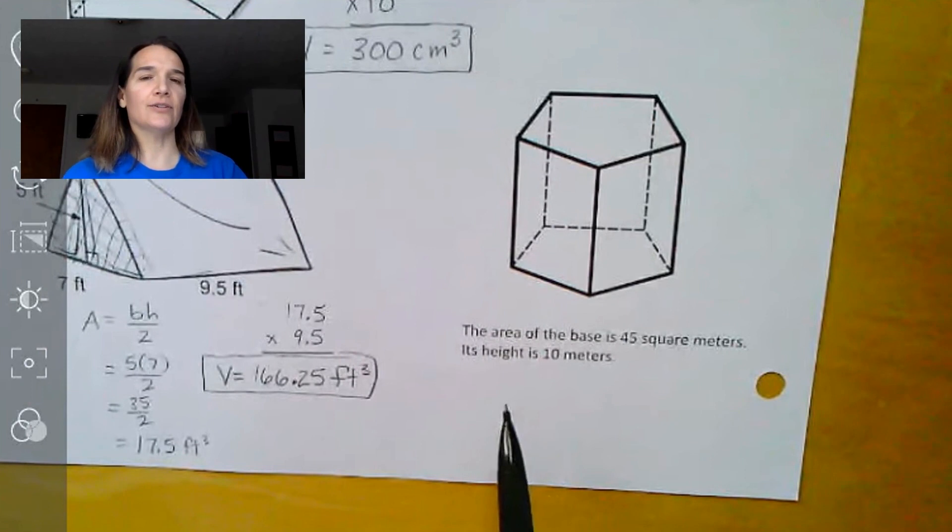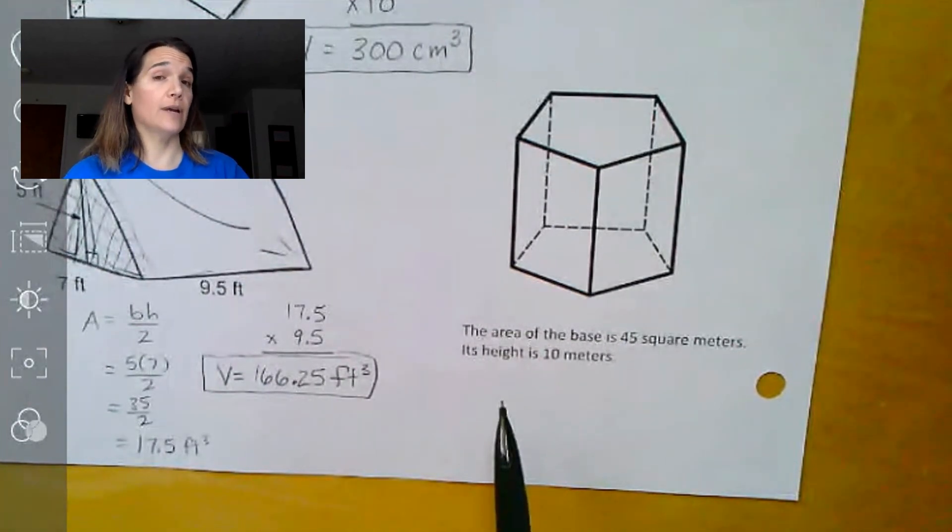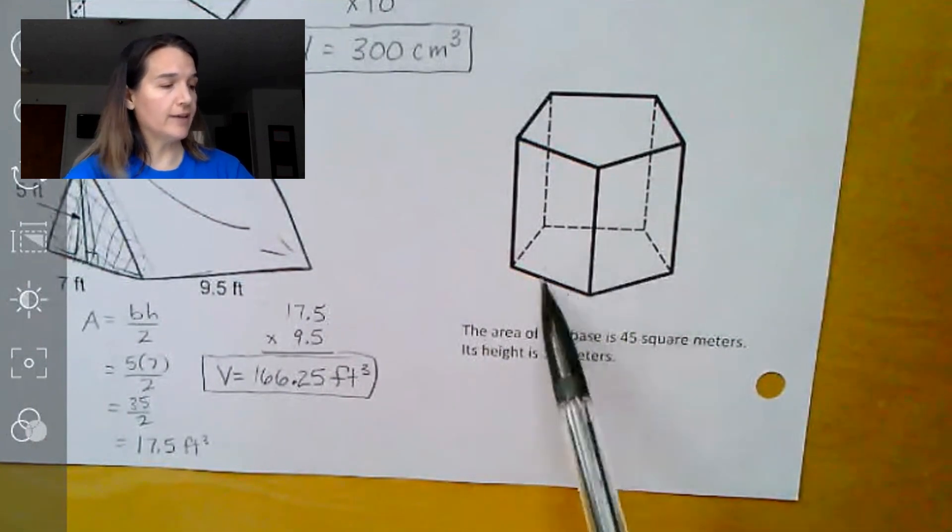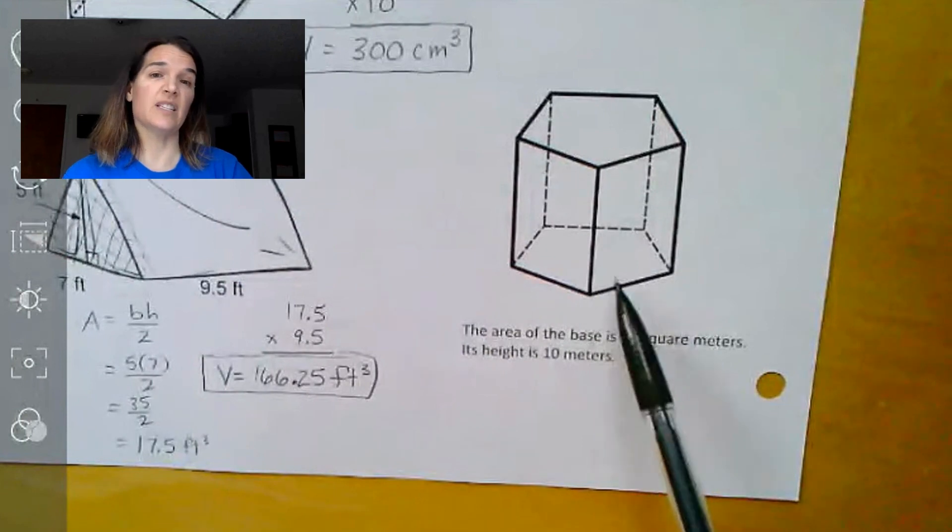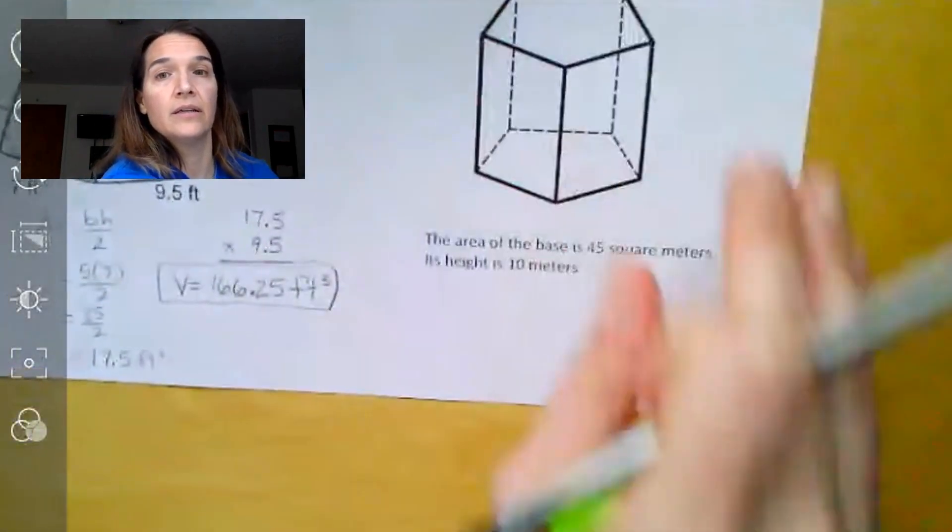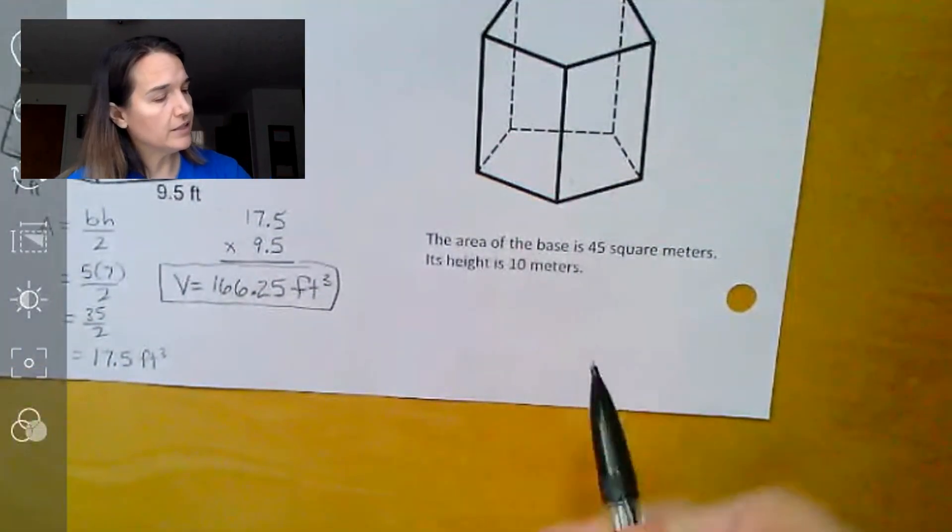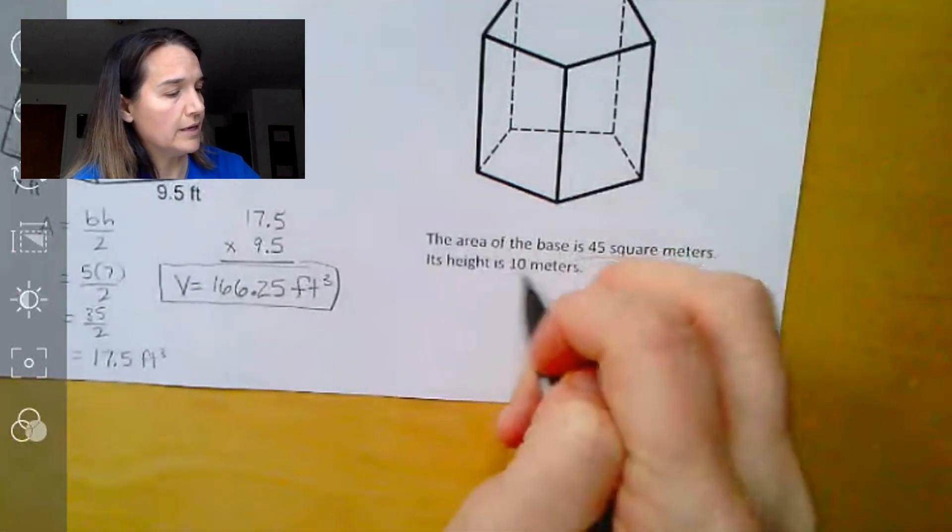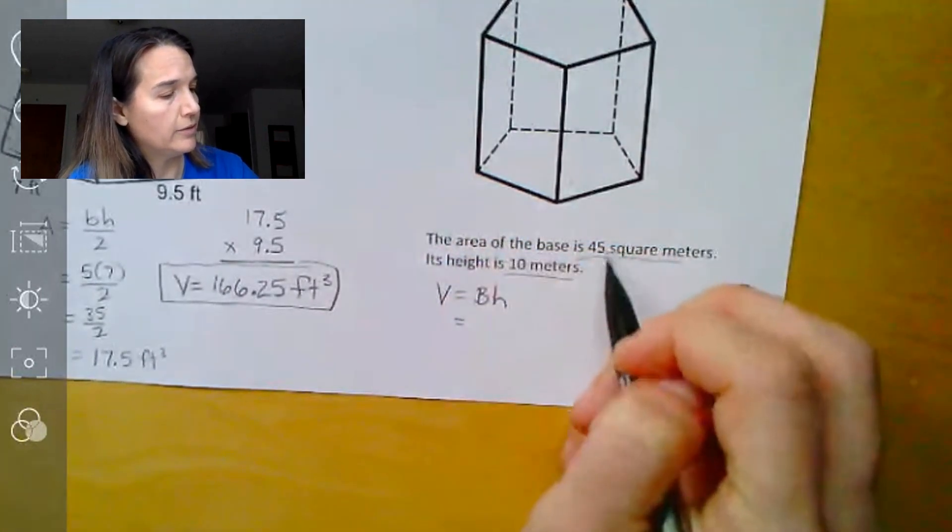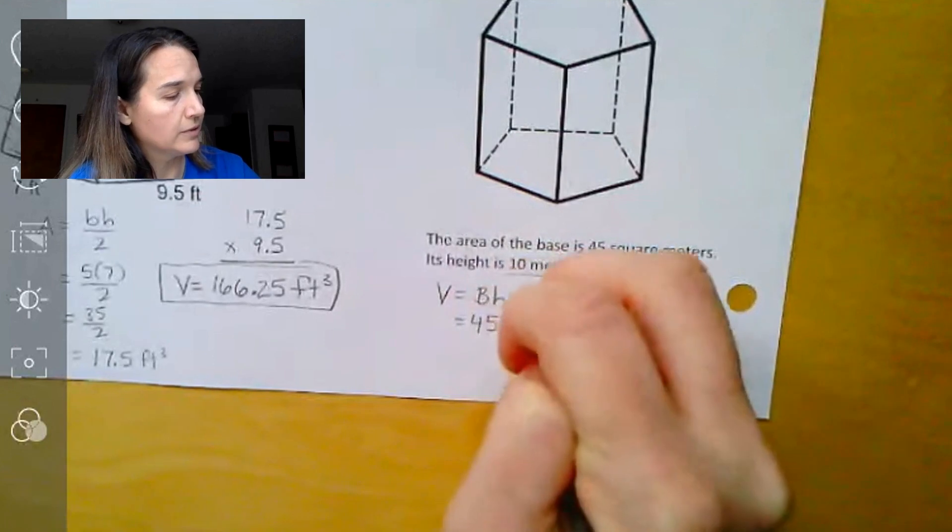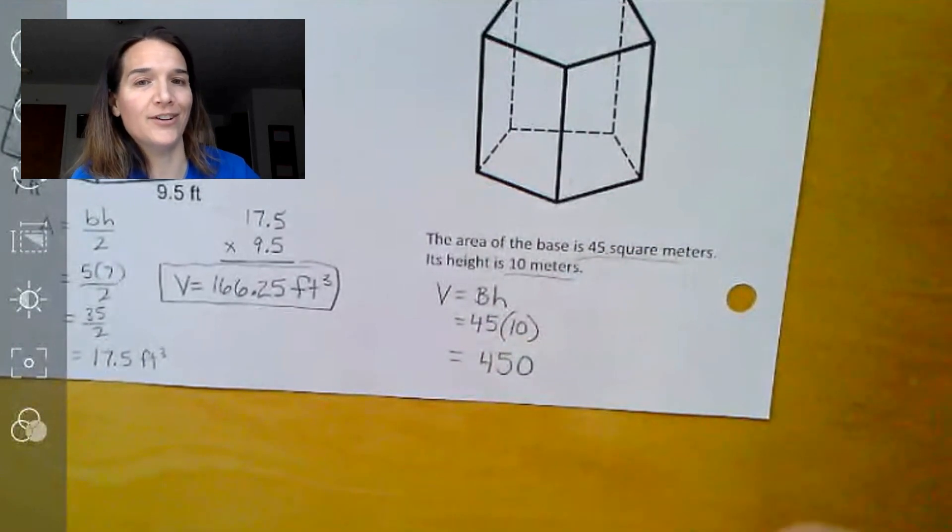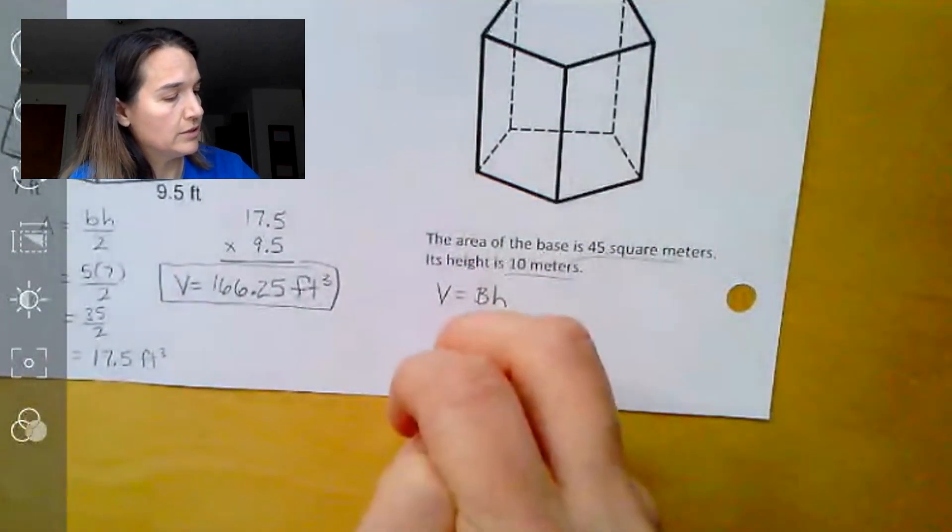This next one here looks a little interesting. It looks harder than the rest, but when it comes to these, since at your age, we don't know how to find the area of a shape like this yet, besides splitting it up into pieces and finding composite area, they'll often just tell us what the area of the base is. So that's even better. So the area of the base here is 45 square meters, and the height is 10. So if we're finding volume, we need the area of the base times the height. The area of the base they already told us is 45, the height they told us is 10. And well, that makes for some easy solving. We get 450 meters cubed for our volume.